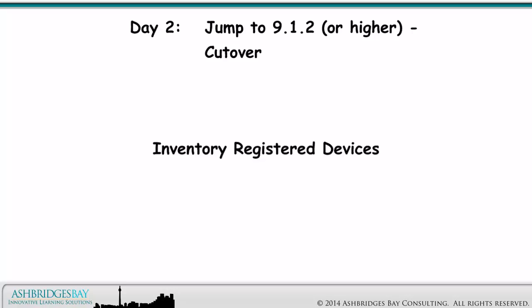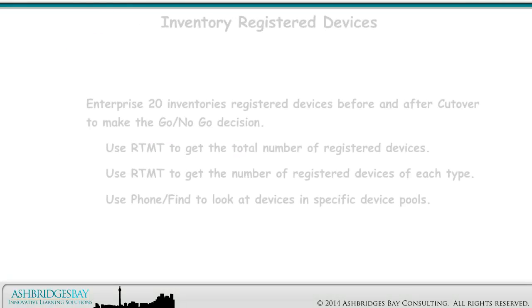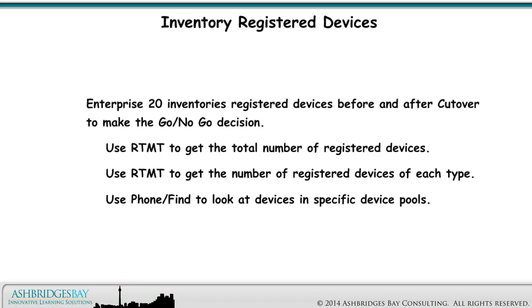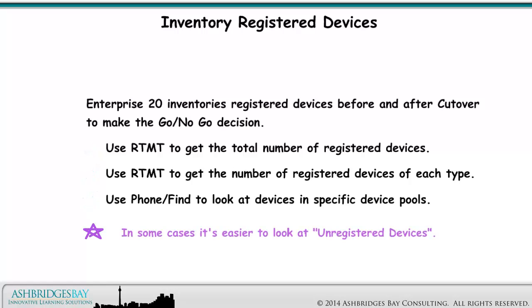We'll inventory registered devices before the Cutover, so we can compare with the results after Cutover and see if any devices don't re-register. Enterprise 20 inventories registered devices before and after Cutover to make the go/no-go decision. Use RTMT to get the total number of registered devices and the number of registered devices of each type. Use Phone Find to look at devices in specific device pools. In some cases, it's easier to look at unregistered devices.